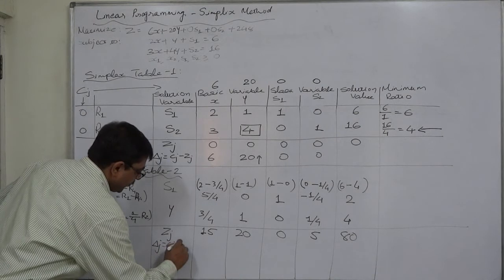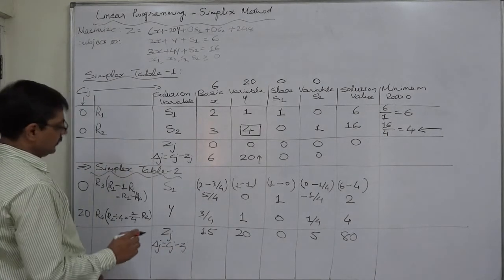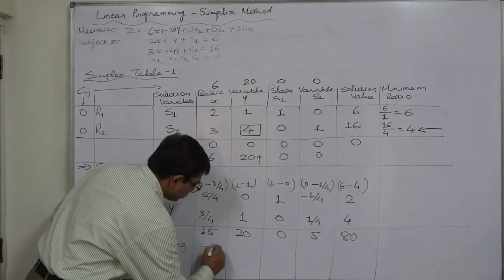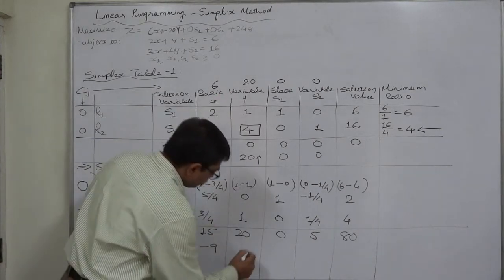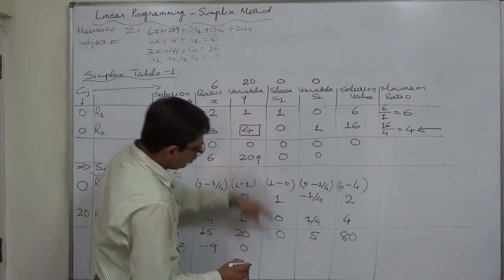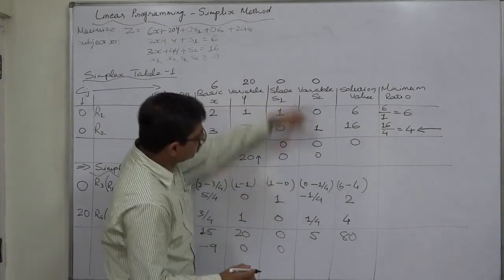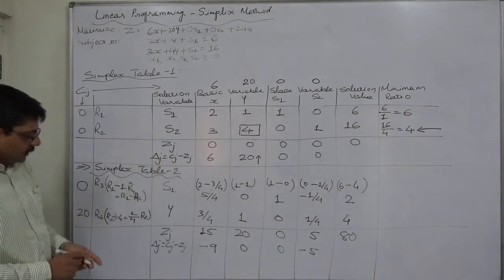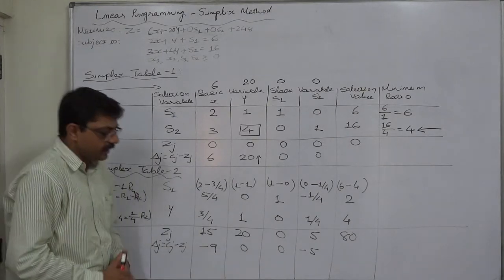Now we can write delta j values, cj minus zj: 6 minus 15 is minus 9; 20 minus 20 is 0; 0 minus 0 is 0; 0 minus 0 is 0; 0 minus 5 is minus 5.